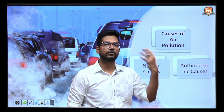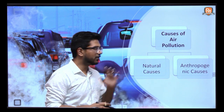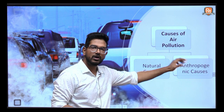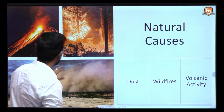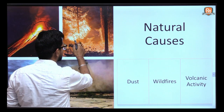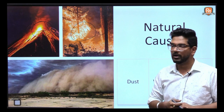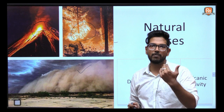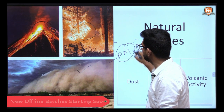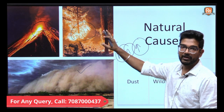On the basis of cause, air pollution can be divided into two types: natural and anthropogenic. Natural causes include volcanic eruptions, which release a lot of toxic gases; forest fires, which produce a lot of carbon dioxide and smoke; and dust storms, which increase particulate matter in the air. These are the three major natural causes of air pollution.